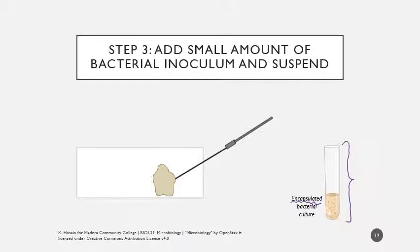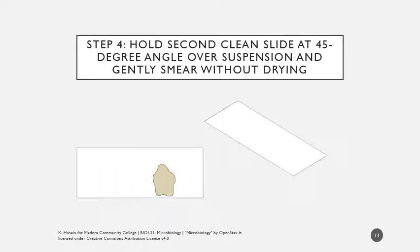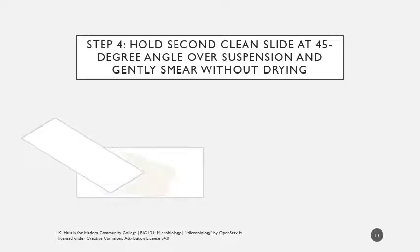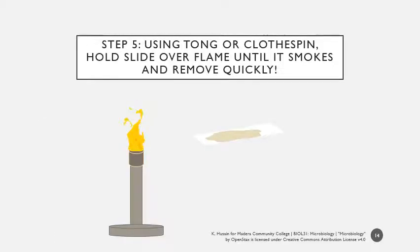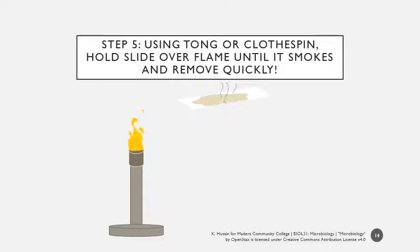The next step is to spread this across the surface of the slide, like we did with negative staining. We're taking a second clean slide, holding it at about a 30 to 45 degree angle over the suspension, aligning the edge with the smear, and slowly and smoothly dragging it across without allowing this to dry. Now we have this spread across the surface of the slide. Then we're going to clamp the slide with a clothespin and hold it over the flame until it smokes, then remove it quickly — not true heat fixing, but setting everything in place.